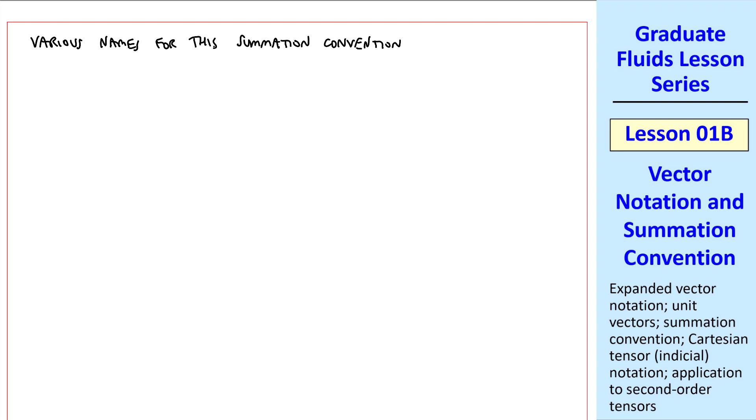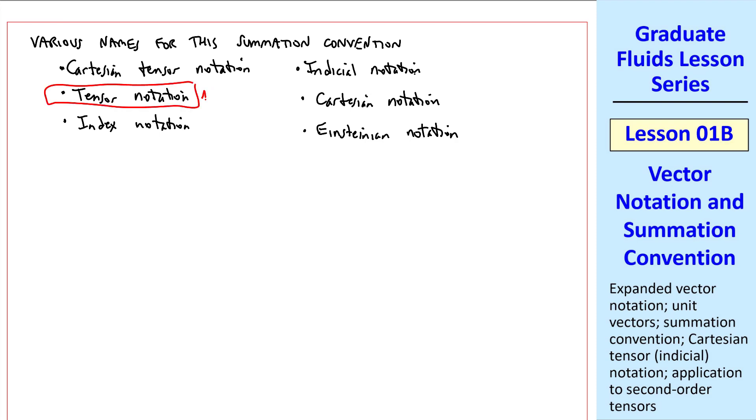There are various names for this summation convention. Cartesian tensor notation is probably the most formal name, which a lot of people just call tensor notation. Other people call it index notation, indicial notation, Cartesian notation, or Einsteinian notation in honor of its inventor. This is the one I'll most often use, but you may find me naming one of these other ones occasionally.